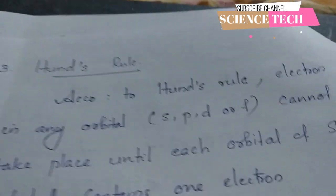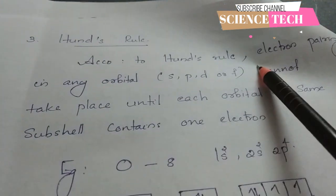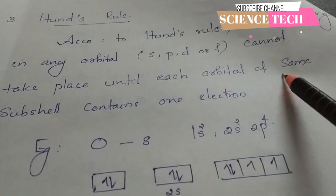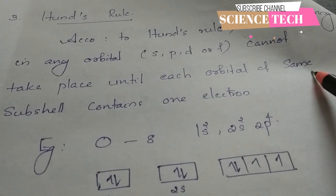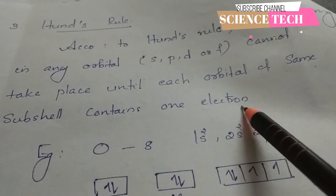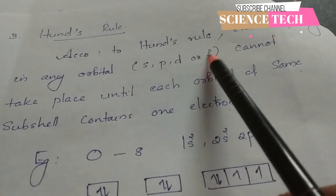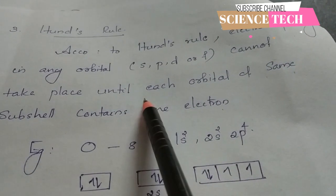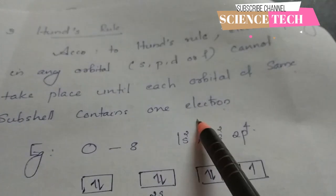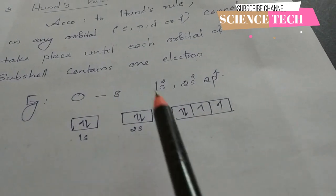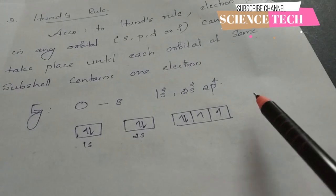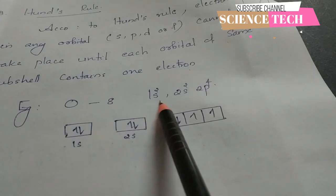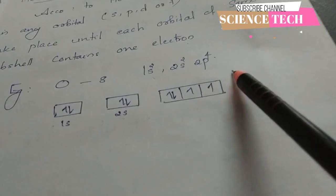The next rule is Hund's rule. For example, oxygen has atomic number 8. Its electronic configuration is 1s2, 2s2, 2p4.